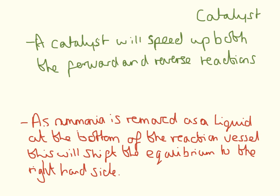So the other thing you need to know is that iron catalyst is used, and the catalyst will speed up the rate of both the forward and reverse reactions. Now, whenever you're talking about ammonia and the Haber process, you have to remember that it's removed as liquid at the bottom of the reaction vessel, so this will automatically shift the equilibrium to the right-hand side.